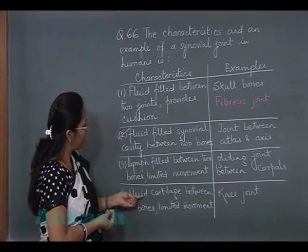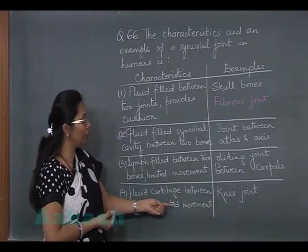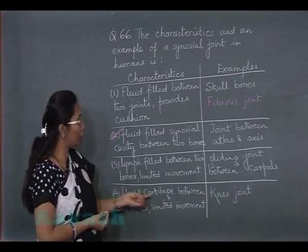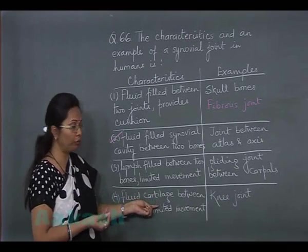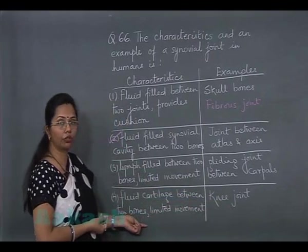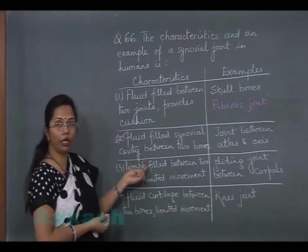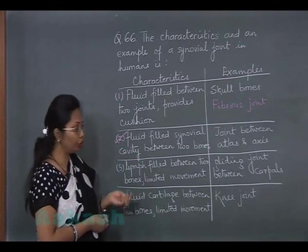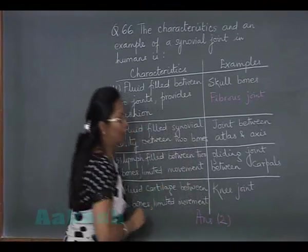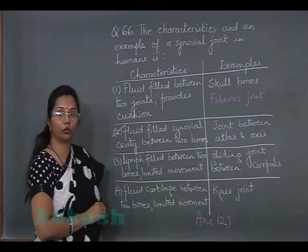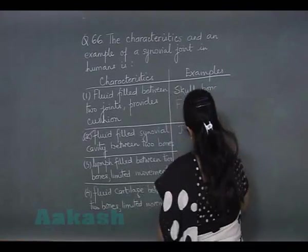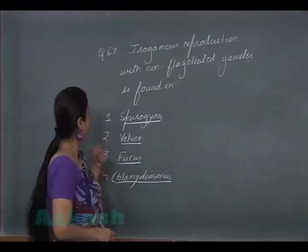The fourth option says fluid cartilage between two bones with limited movement — limited movement makes it wrong, and there is no such thing as fluid cartilage; it is simply synovial fluid. The example of knee joint is correct, but the characteristics are wrong. So the only correct option is option 2.